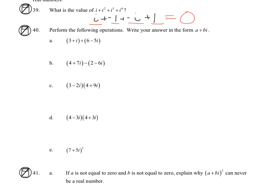So now for 40, for a to add, we're just going to combine our like terms. For b to subtract, this negative has to go to both parts of that complex number. Now I can combine my like terms.